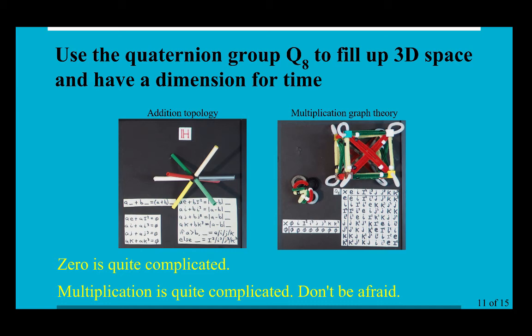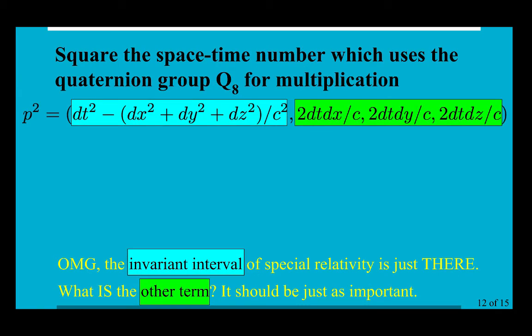So yeah, zero looks super complicated, multiplication is even more complicated, but let's not be afraid, let's do something simple. We're just going to square the space-time number which uses this quaternion group Q_8 for multiplication. Oh my god, the invariant interval of special relativity is just sitting there. Now if you go and do Google on the internet, you'll find people will find a discussion of this and people will say that was just lucky, it's meaningless.